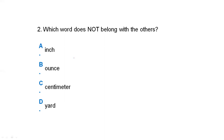The next question: which word does not belong with the others? Option A is inch, option B, option C, and option D are given. Here, we have units used to measure length in the same group, and the one that belongs to weight measurement is different. So the correct answer is option B, which is different.